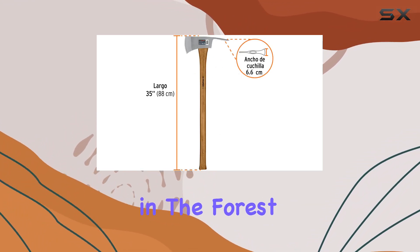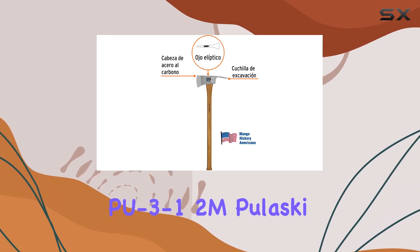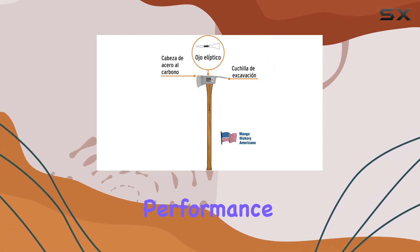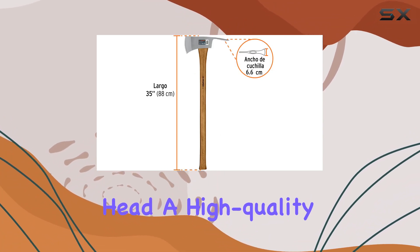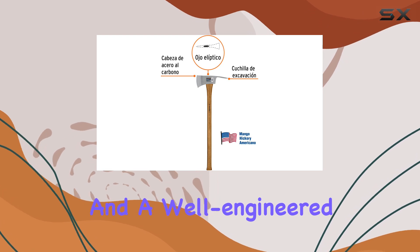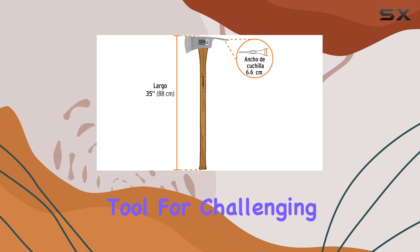Whether you're tackling a tough job in the forest or clearing land, the Truper PU 3-1/2M Pulaski axe delivers performance and reliability. Its combination of a strong carbon steel head, a high-quality hickory handle, and a well-engineered design make it a standout choice for those needing a dependable tool for challenging work.